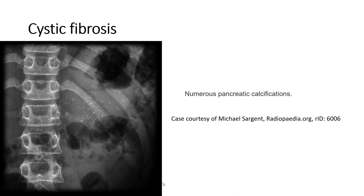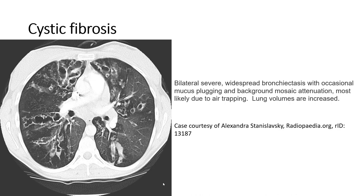On the abdominal X-ray, we can see numerous pancreatic calcifications in a case of cystic fibrosis affecting the GI system. The CT shows bilateral severe widespread bronchiectasis with occasional mucus plugging and background mosaic attenuation, most likely due to air trapping. Lung volumes are increased, consistent with cystic fibrosis.